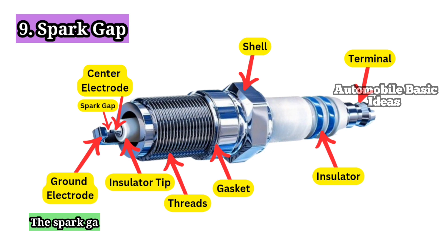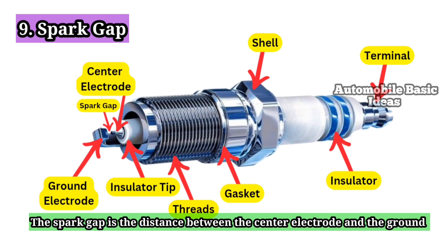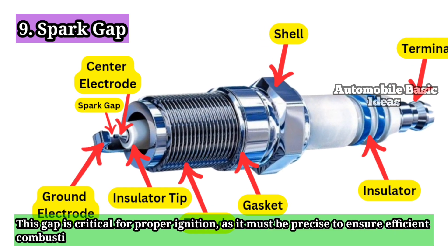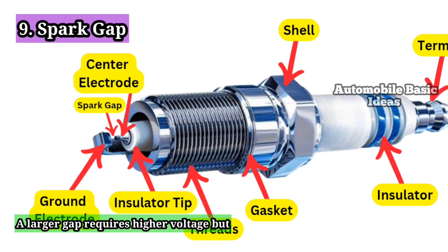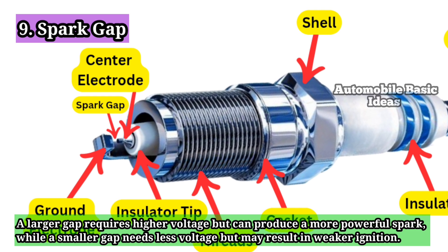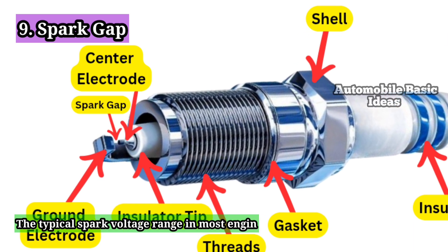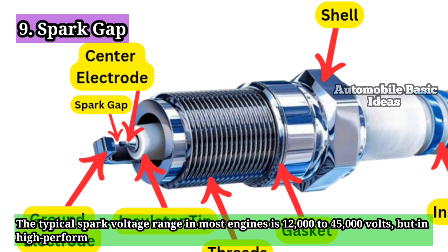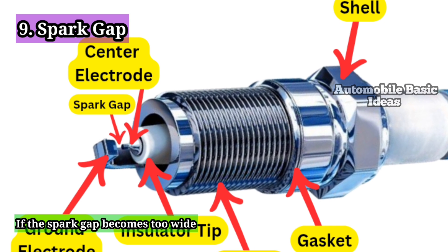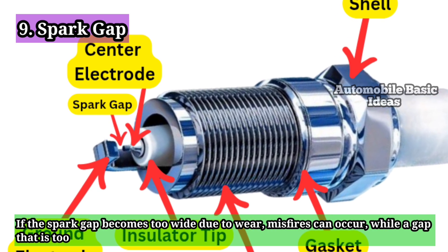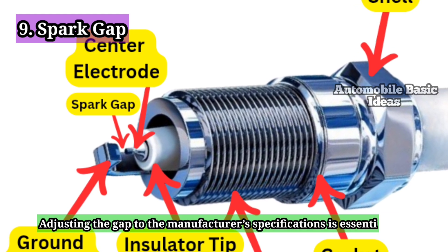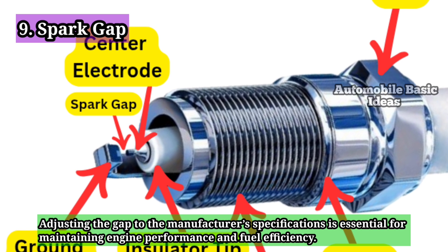9. Spark Gap. The spark gap is the distance between the center electrode and the ground electrode, where the spark occurs. This gap is critical for proper ignition, as it must be precise to ensure efficient combustion. A larger gap requires higher voltage but can produce a more powerful spark, while a smaller gap needs less voltage but may result in weaker ignition. The typical spark voltage range in most engines is 12,000 to 45,000 volts, but in high-performance or modern ignition systems, it can exceed 60,000 volts. If the spark gap becomes too wide due to wear, misfires can occur, while a gap that is too small may lead to incomplete combustion. Adjusting the gap to the manufacturer's specifications is essential for maintaining engine performance and fuel efficiency.